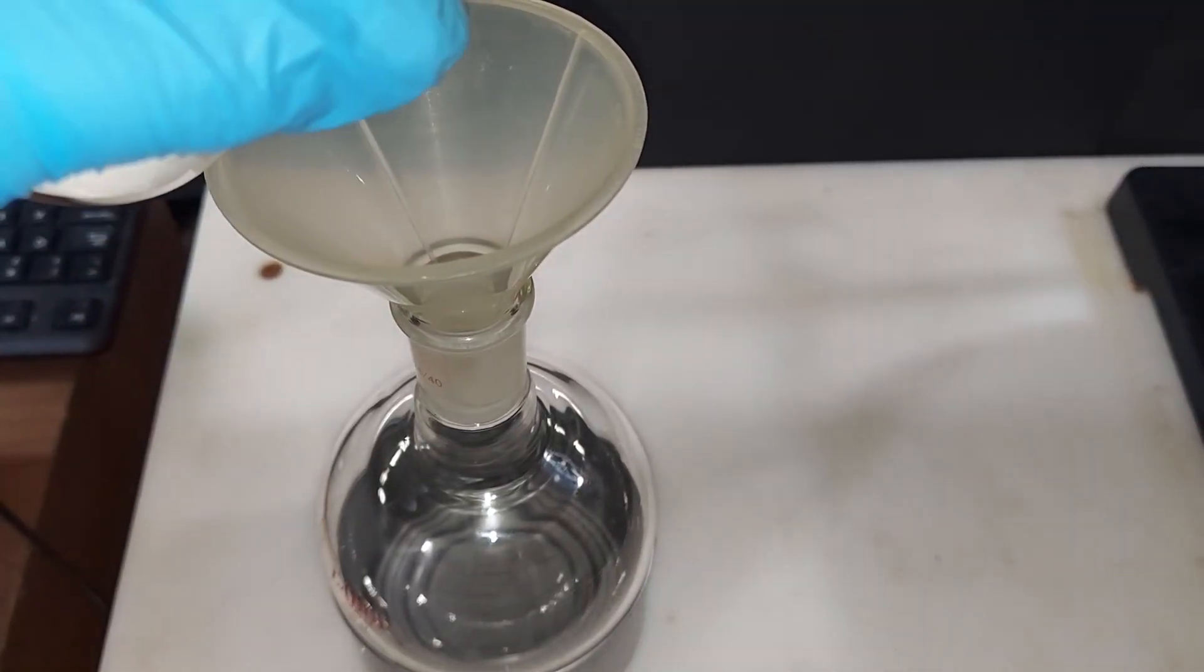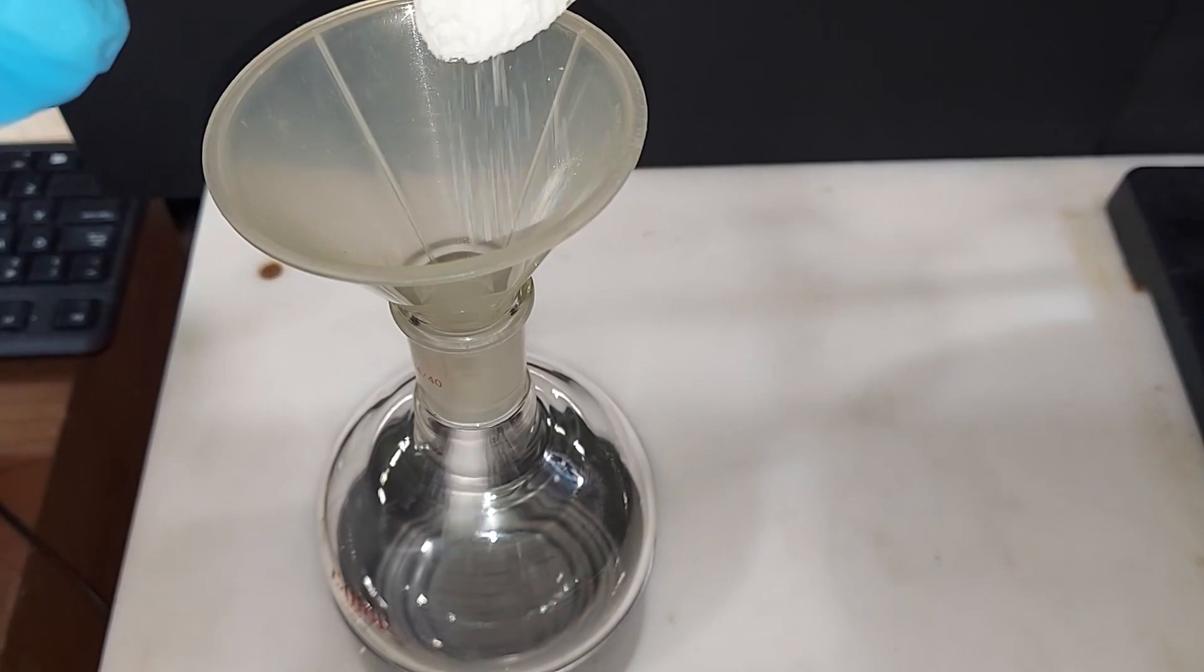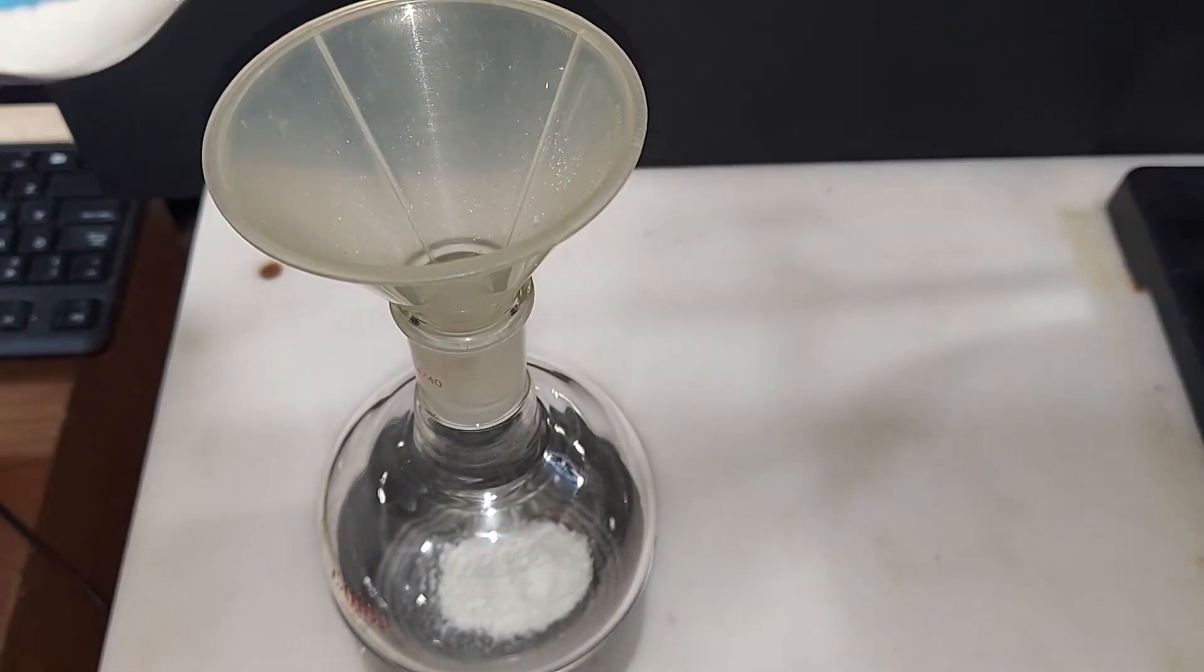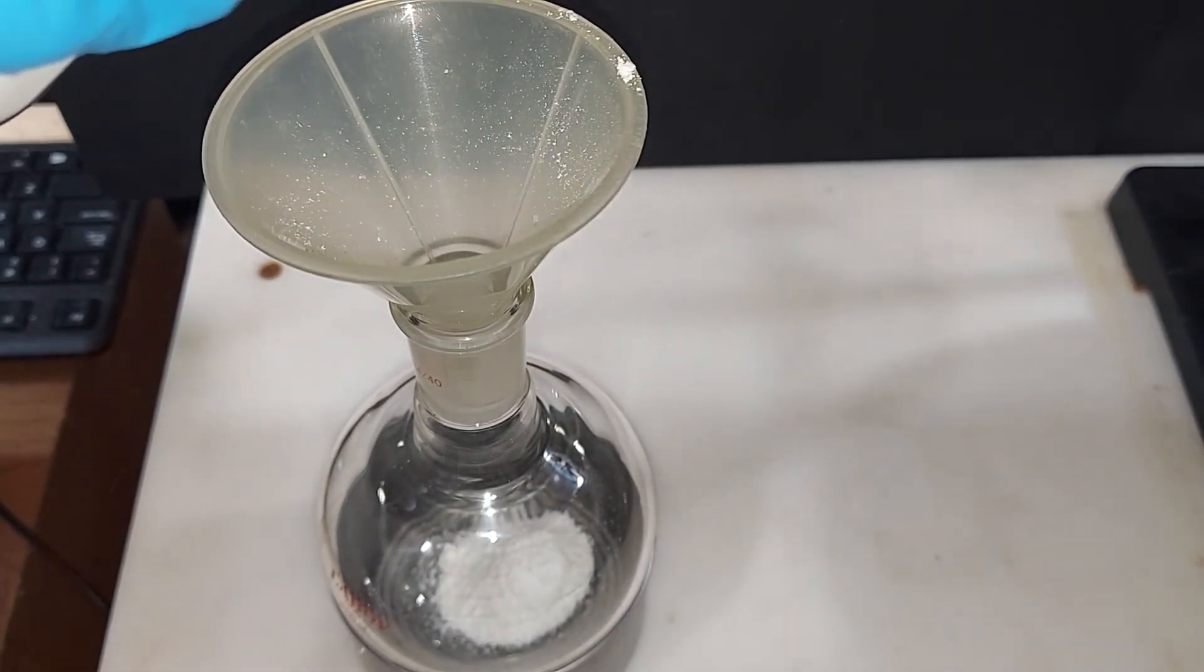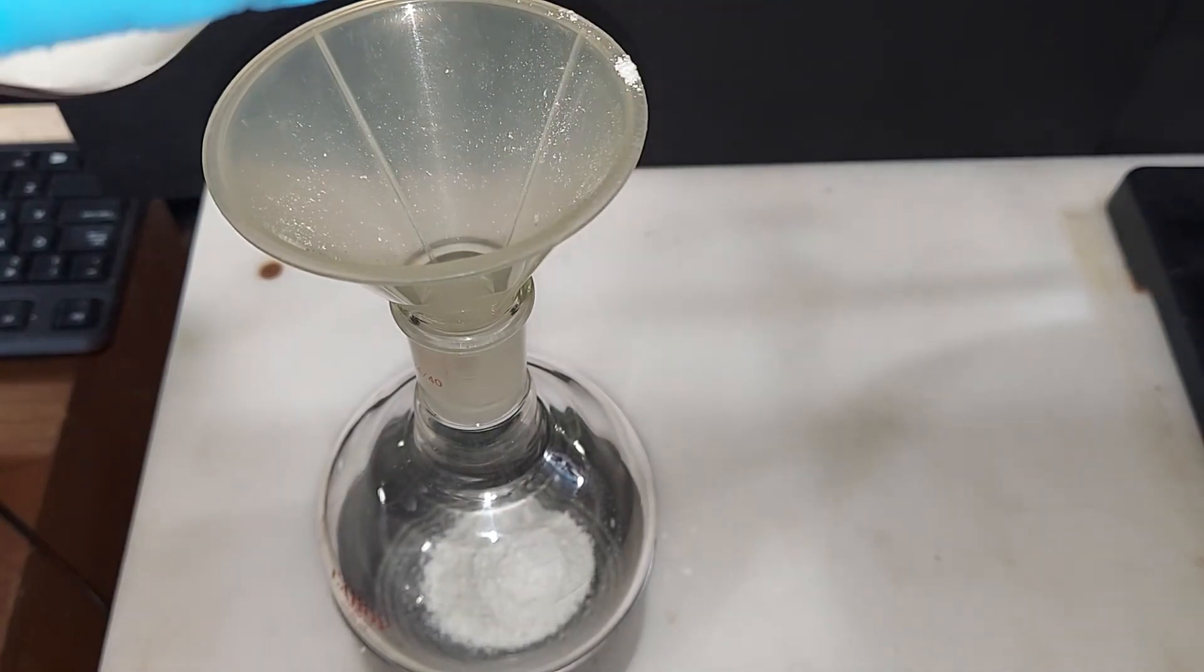Putting the calcium acetate that we made from eggshells and vinegar into a 500 milliliter round bottom flask, and that's to set it up for the distillation, the first distillation.